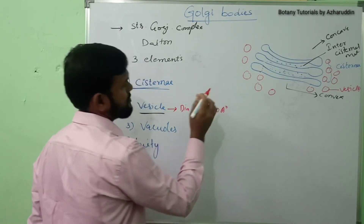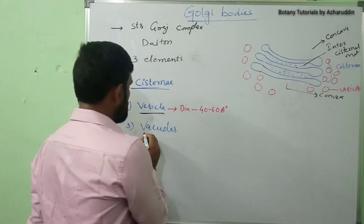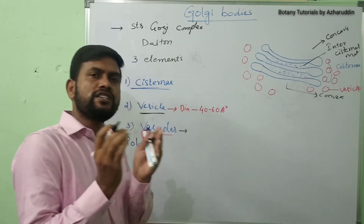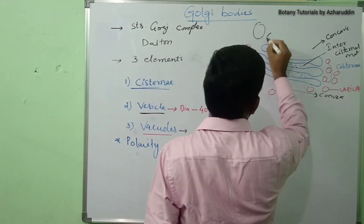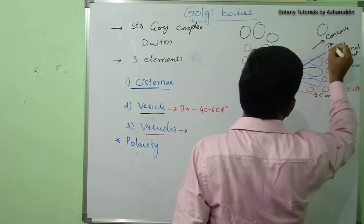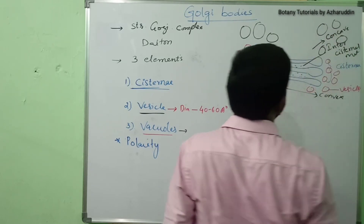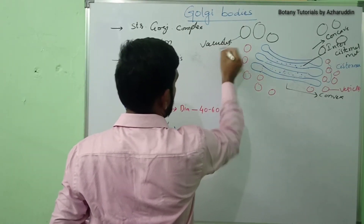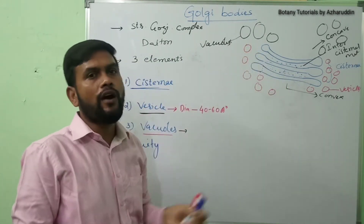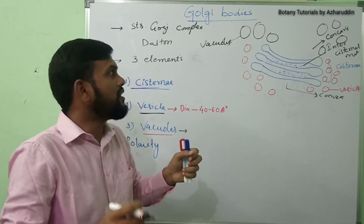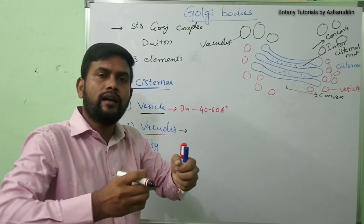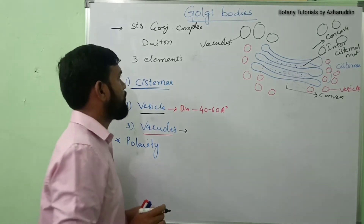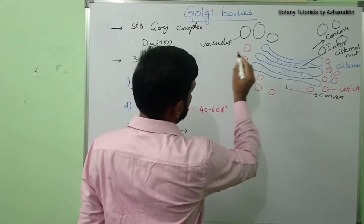Next, coming to vacuoles — vacuoles are large spherical structures. They are also present at the ends of the cisternae. They are formed due to enlargement of the cisternae; when the cisternae are enlarged in their size, vacuoles are automatically formed.